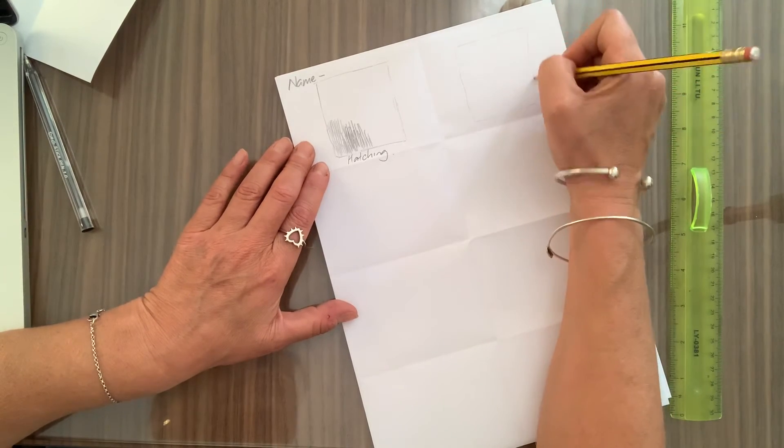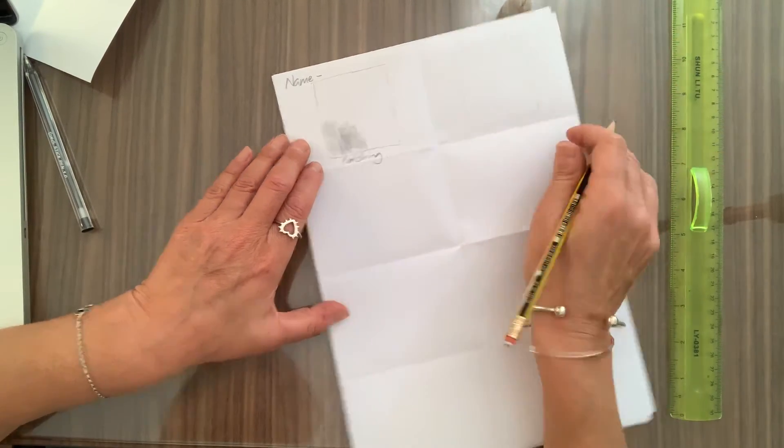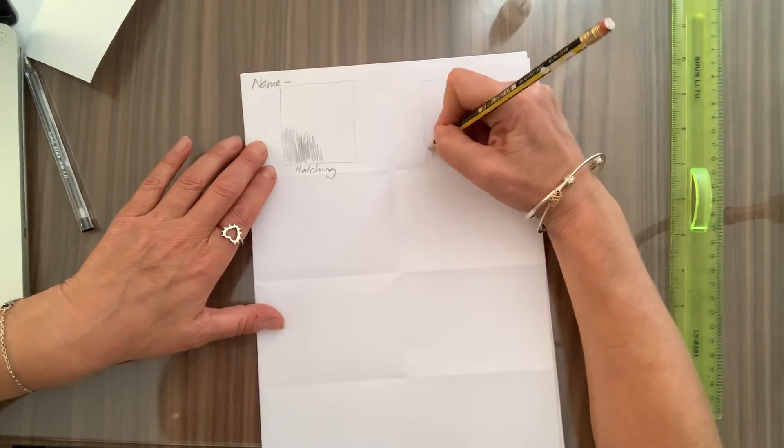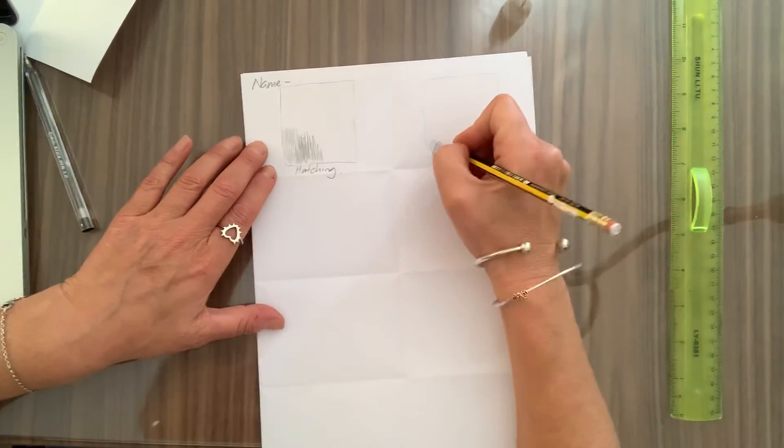And if you watch the video, she shows you how to do it. Cross hatching is when we are drawing lines like this.